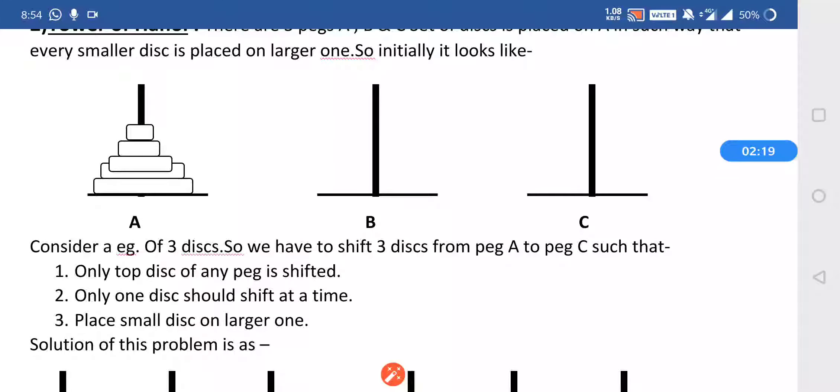These are the three basic rules required when transferring the disks from A to C: we can shift only the top disk, we can shift only one disk at a time, and we can place a small disk on a larger one but not a larger disk on a smaller one. By using these three rules, we have to shift the disks from peg A to peg C.